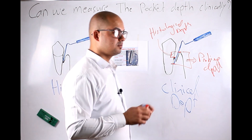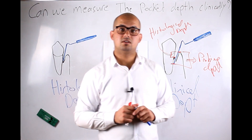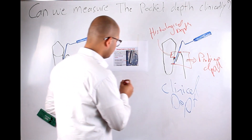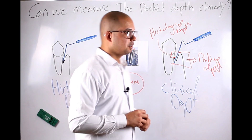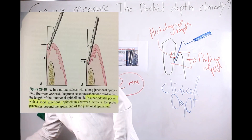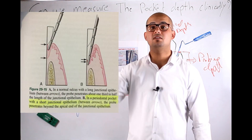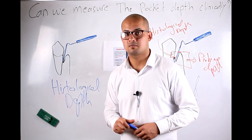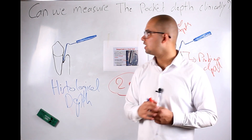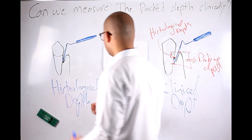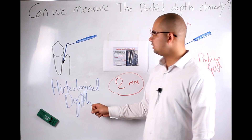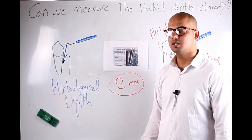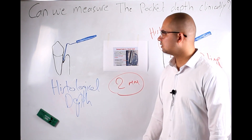Under normal circumstances, the discrepancy between examiners is about two millimeters, as reported in the literature — we always pass that point even in normal patients, and even more so in patients with periodontitis. To conclude: histological depth cannot be measured clinically; it is only measured histologically by taking a histological section and measuring that distance.